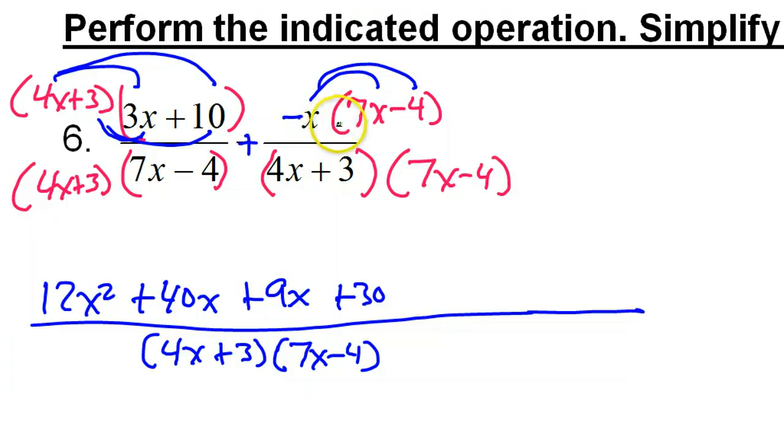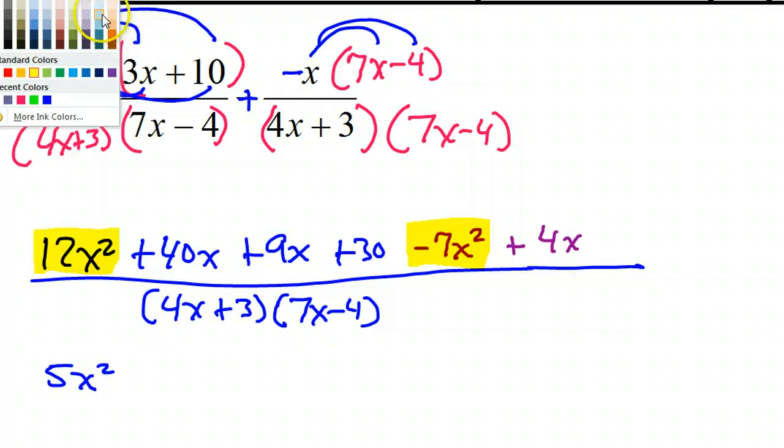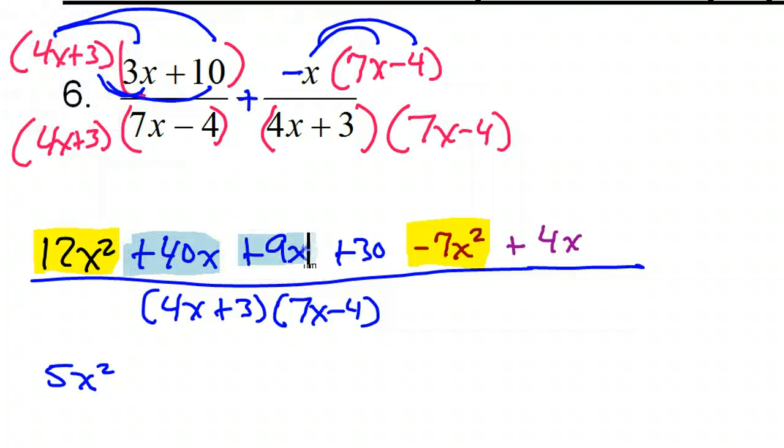So, now it's time to distribute the negative x. So, when I do that, I'm going to have negative 7x squared plus 4x. Alright, so now it's time to combine like terms. Looking for the highest degrees first. So, we will have 12x squared and a negative 7x squared. Alright, so of course that is 5x squared. Alright, now let's do the x terms. Well, we have 40 and 9. So far, that's 49x plus another 4x. So, that's 53x. And that just leaves a sad and lonely plus 30.